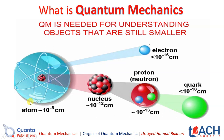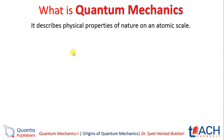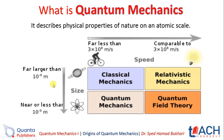So at what level can we apply quantum mechanics? We can apply it at the atomic level. Quantum mechanics describes the physical properties of nature at the atomic scale — meaning at the size of atoms and below. Beyond that, we will discuss later where quantum mechanics transitions into classical mechanics.